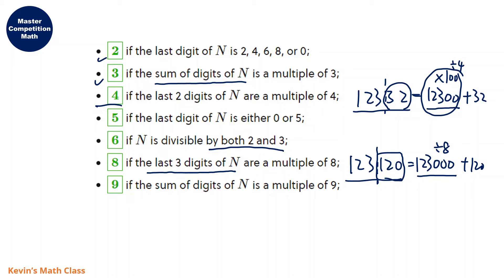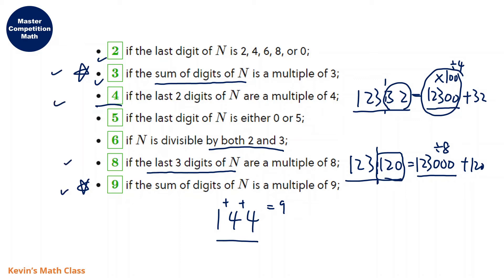And lastly, if the sum of the digits of n is a multiple of nine, this is similar to the rule of three. For example, we have 144. The digits add up to nine, so the number 144 is a multiple of nine. I would say all these rules are very useful, especially for three, four, eight, and nine.